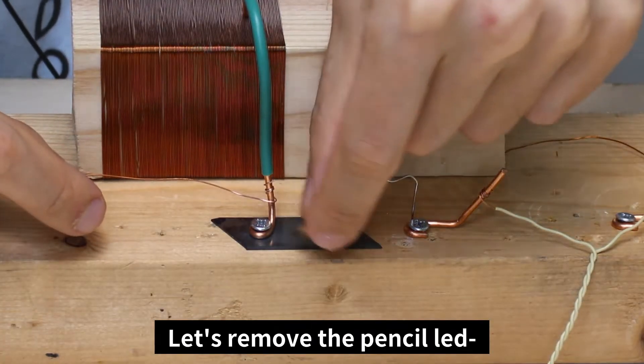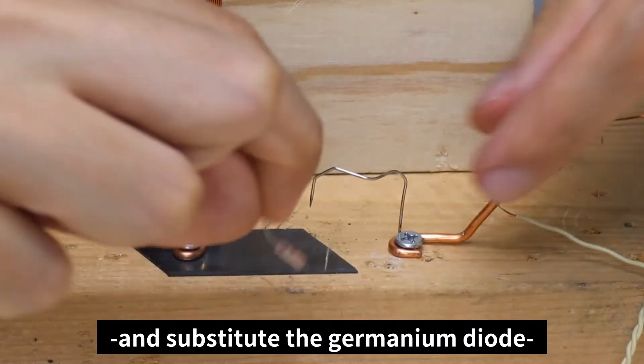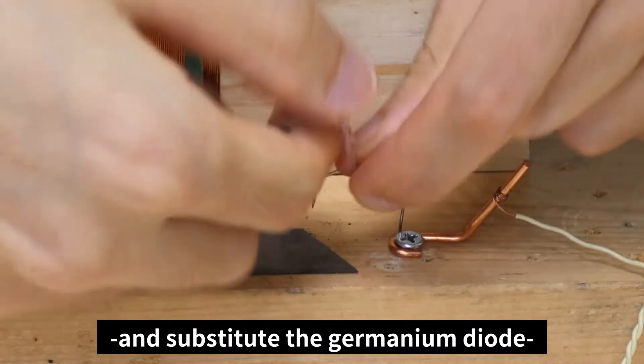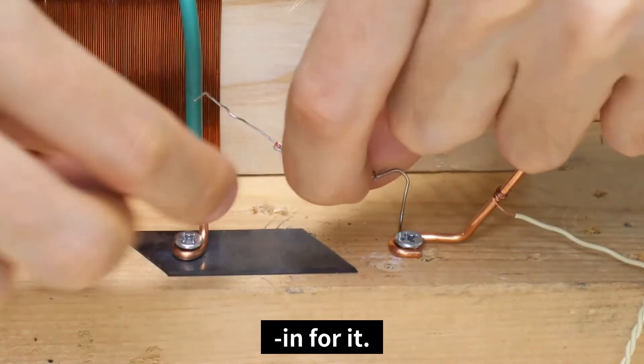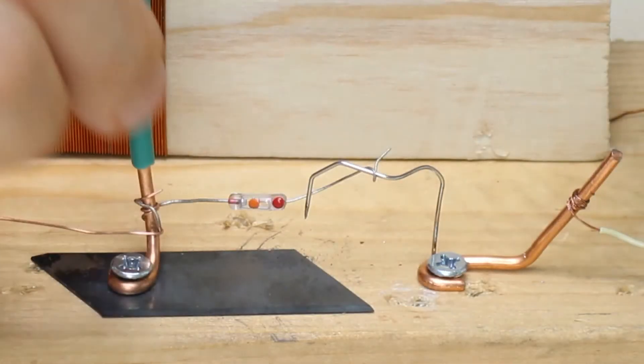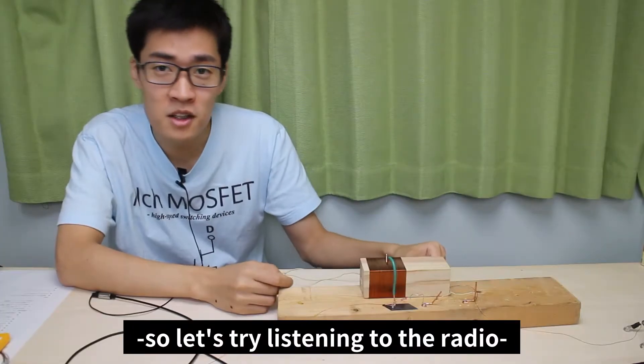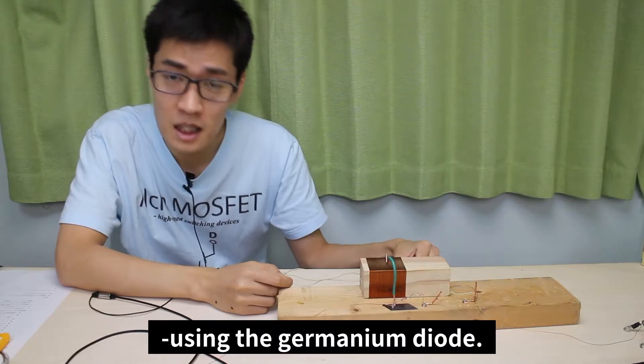Let's remove the pencil lead and substitute the germanium diode in for it. We're done with the preparations, so let's try listening to the radio using the germanium diode.